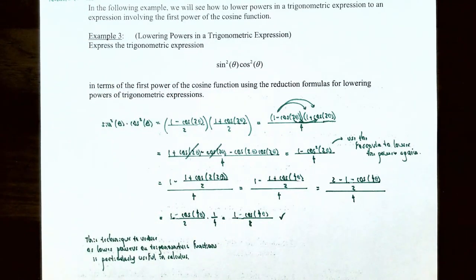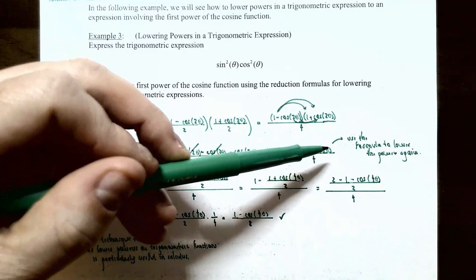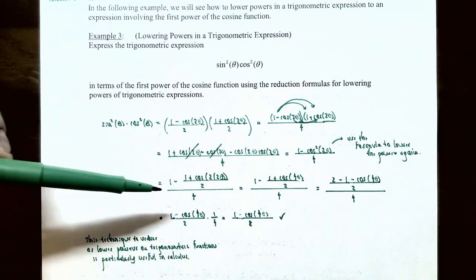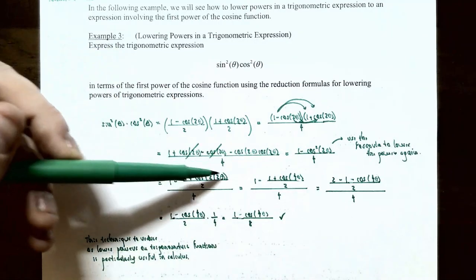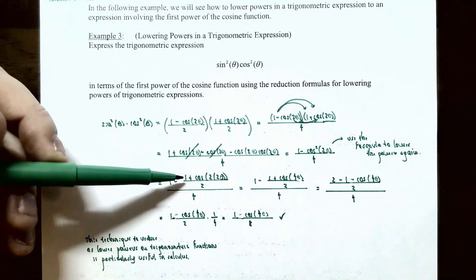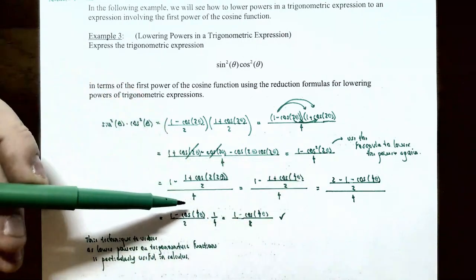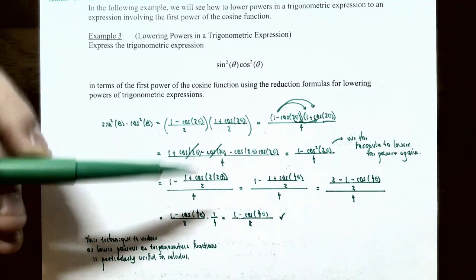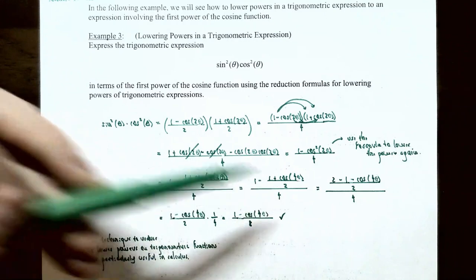We can apply the reduction formulas again to rewrite cos²(2θ) in terms of cosine to the first power. The formula gives cos²(2θ) = (1 + cos(2·2θ)) / 2 = (1 + cos(4θ)) / 2. So the numerator becomes 1 − (1 + cos(4θ)) / 2, and the denominator remains 4.